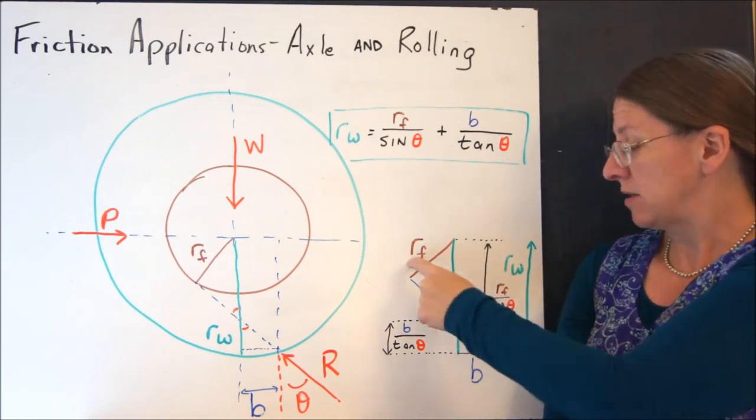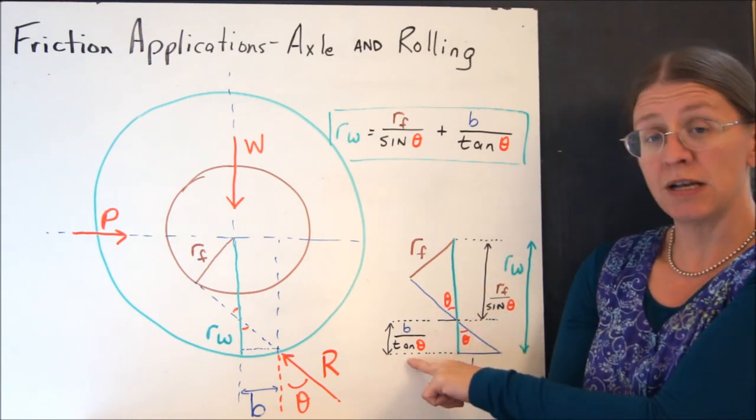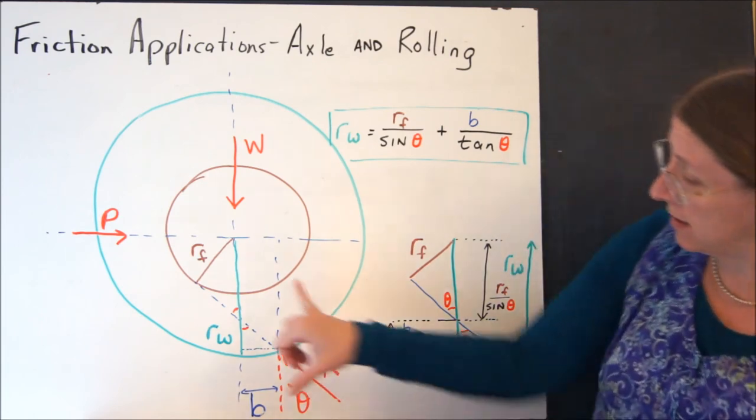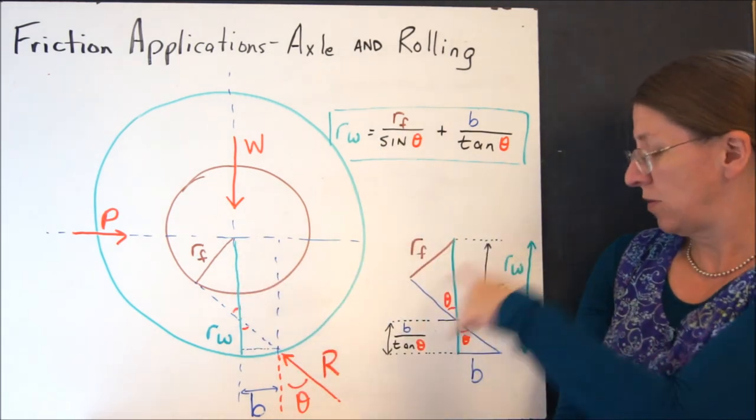That means that this height is Rf over sin theta, and this little height is B over tan theta, and the whole height is the radius of the wheel. So the radius of the wheel is this one plus that one.